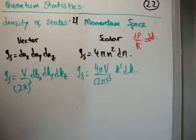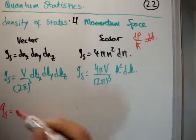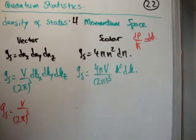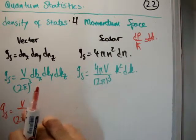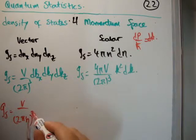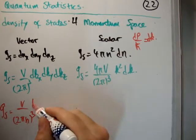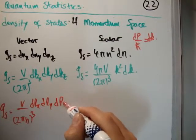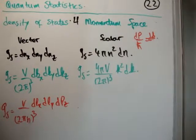Okay, so let's just plug it in. So g_s is equal to V over (2π)³. Then we have three factors of ℏ which go like that. Now we're going to have dp_x, dp_y, dp_z. Okay.